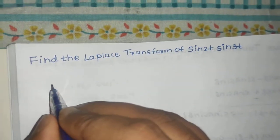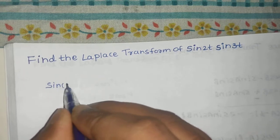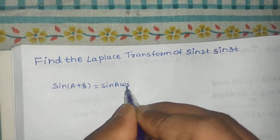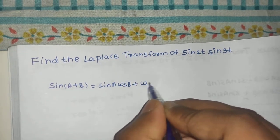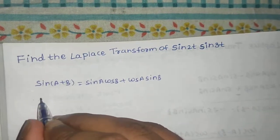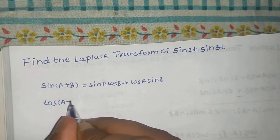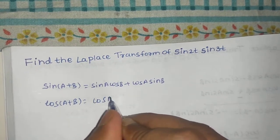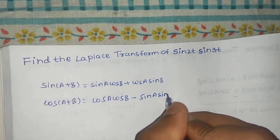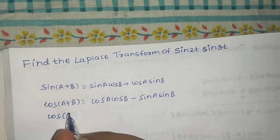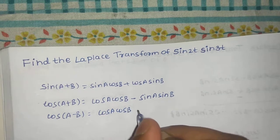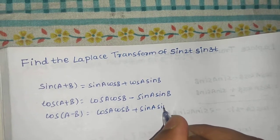We know the formula for sin(a+b) = sin(a)cos(b) + cos(a)sin(b), but this doesn't give us a sine-sine product directly. So we use cos(a+b) = cos(a)cos(b) − sin(a)sin(b), and cos(a−b) = cos(a)cos(b) + sin(a)sin(b).